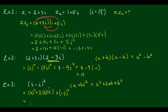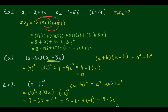So 3 squared is equal to 9, then minus 2 times 3 is equal to 6, and the i stays, and then plus negative 1 squared is equal to positive 1, and then we have i squared. So we have 9 minus 6i plus negative 1, because i squared is equal to negative 1, and we end up with 8 minus 6i.